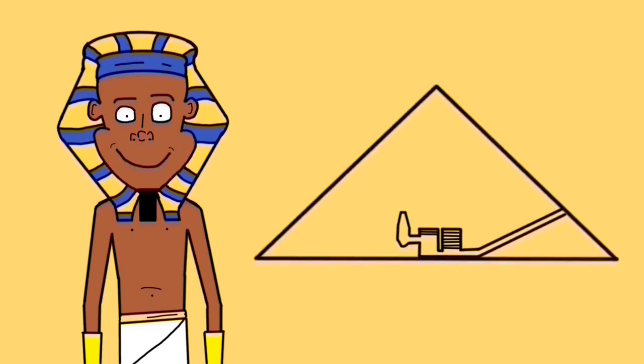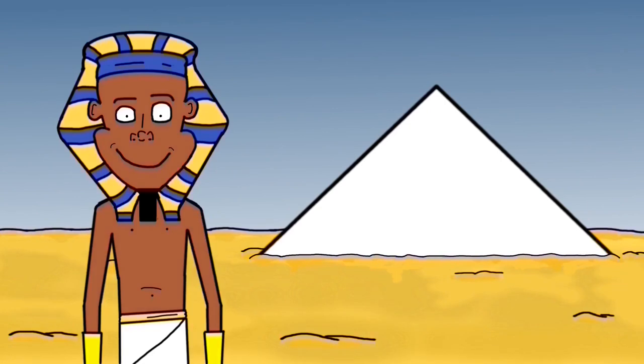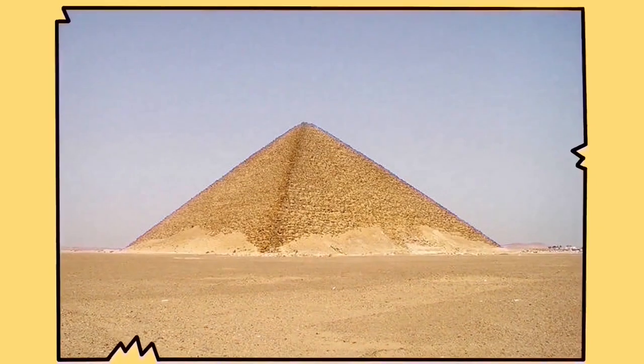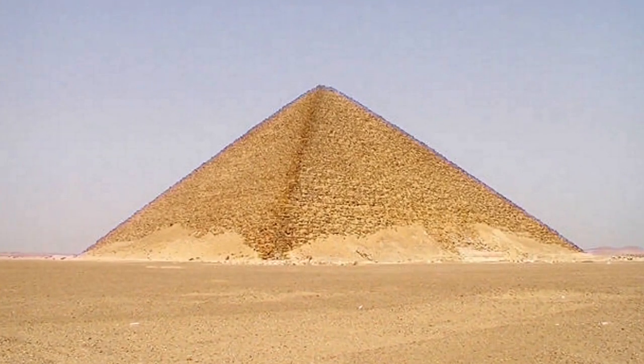Sneferu's architects had learnt from their failures, and this time they built at a much reduced angle. When it was completed, it was the first true smooth-sided pyramid. In the end, Sneferu's perseverance paid off and he finally had his resting place. At that time, with all its casing stones still on, it would have gleamed white. Today, however, it has become known as the Red Pyramid due to its reddish sandstone used in its construction. But most importantly, the Egyptians had learnt the knowledge needed to build true smooth-sided pyramids.